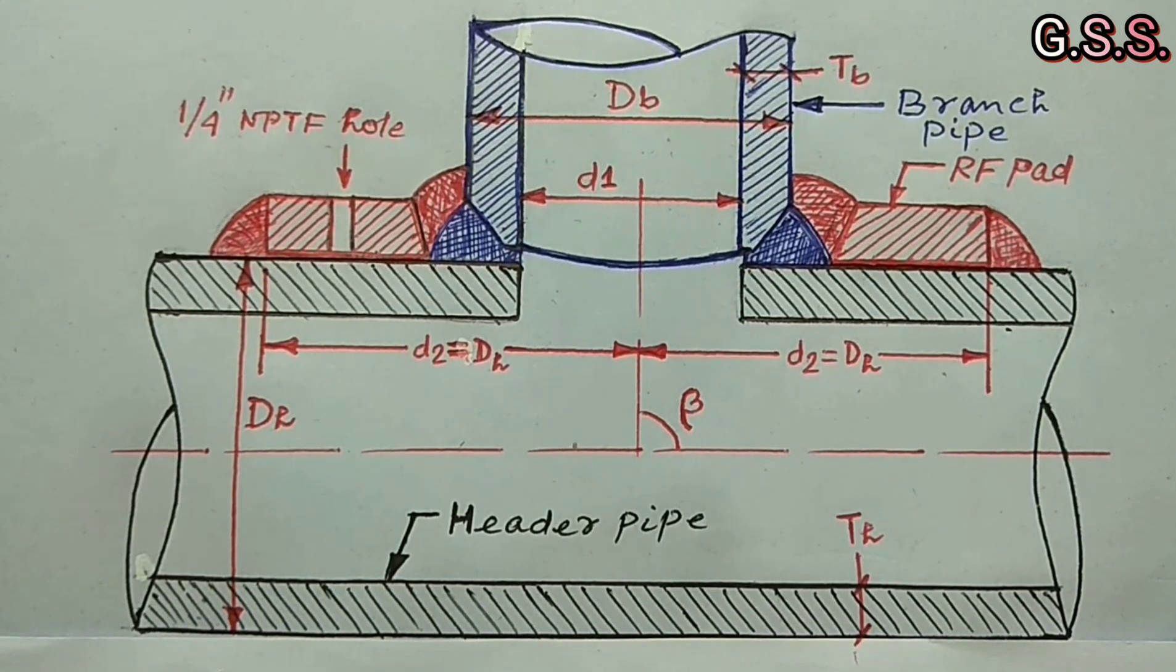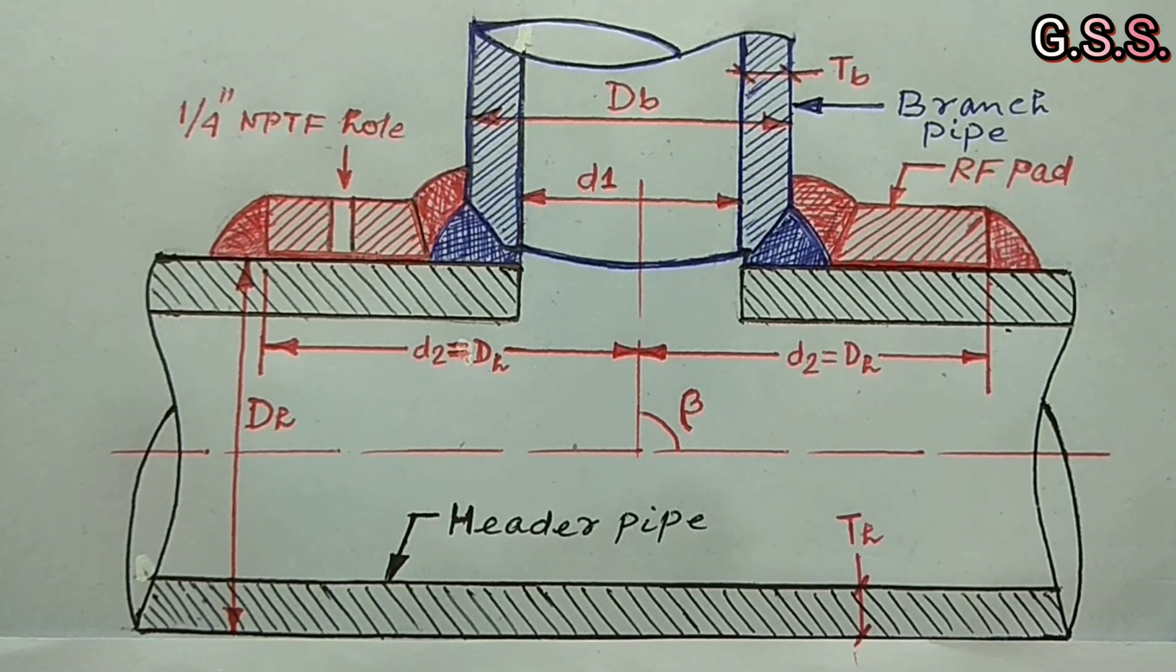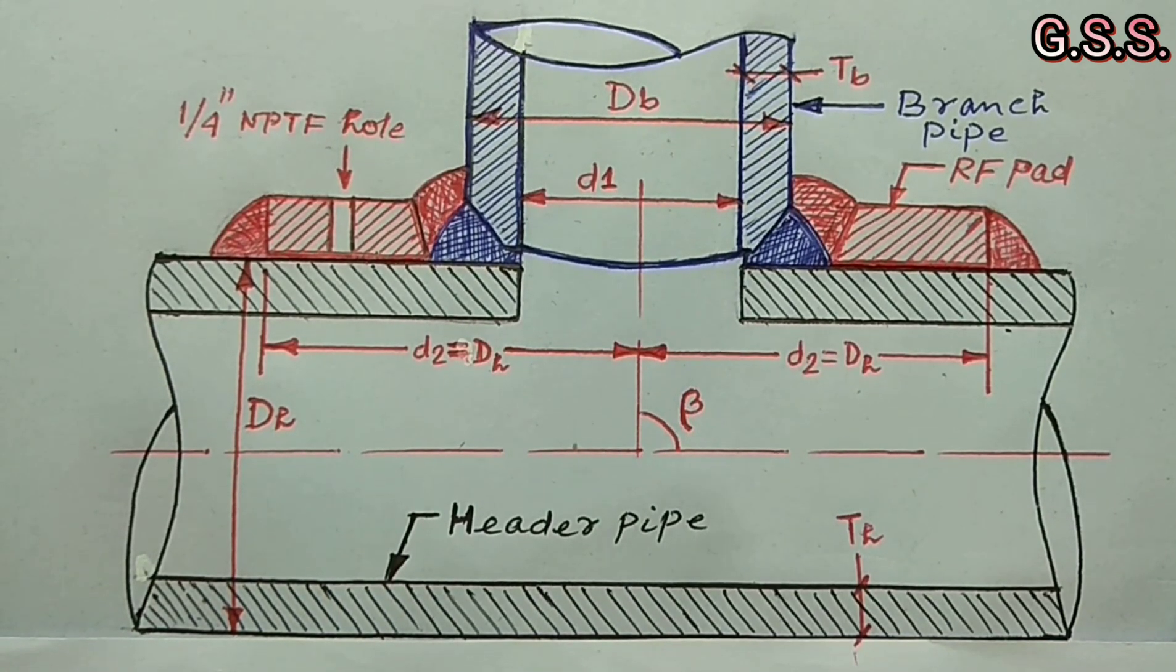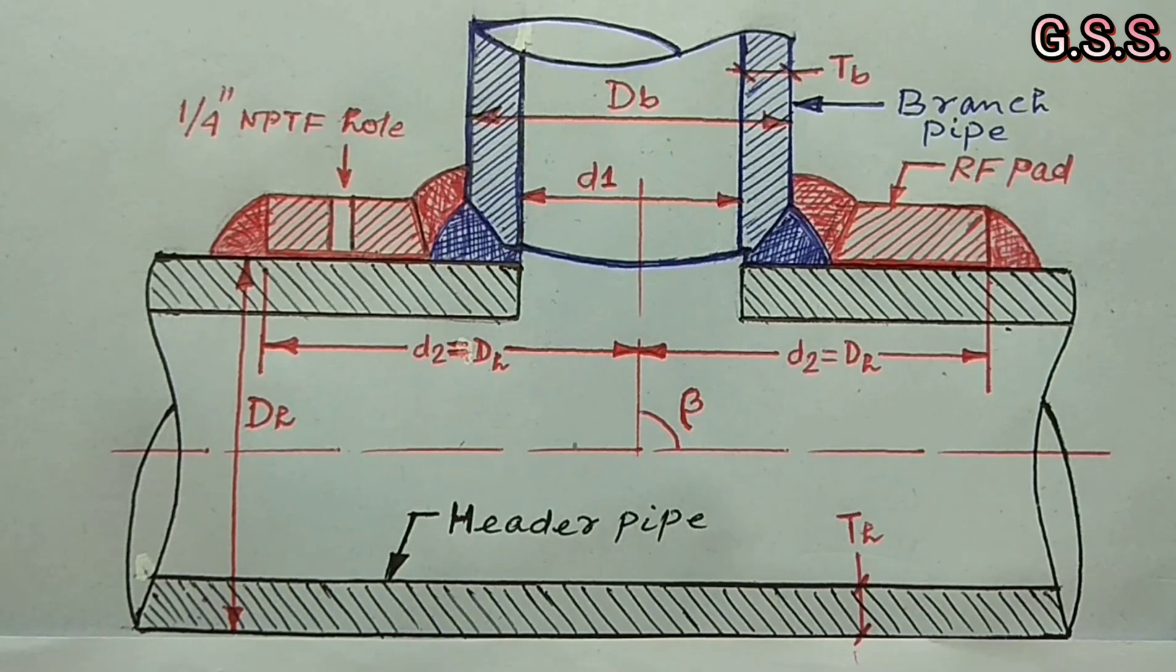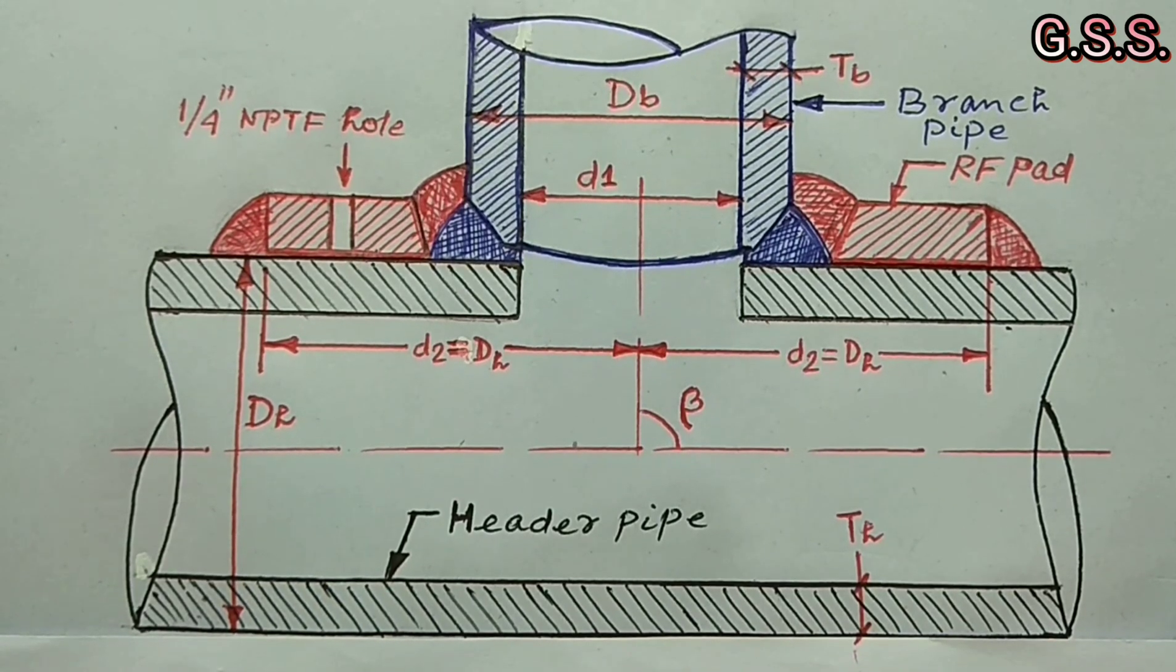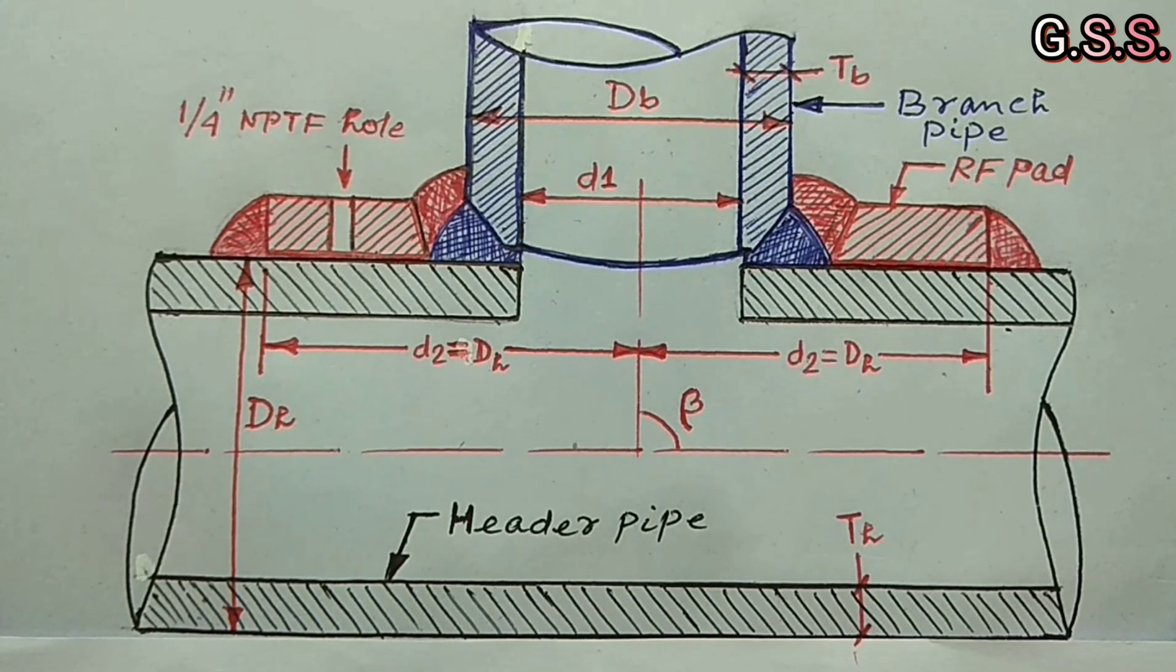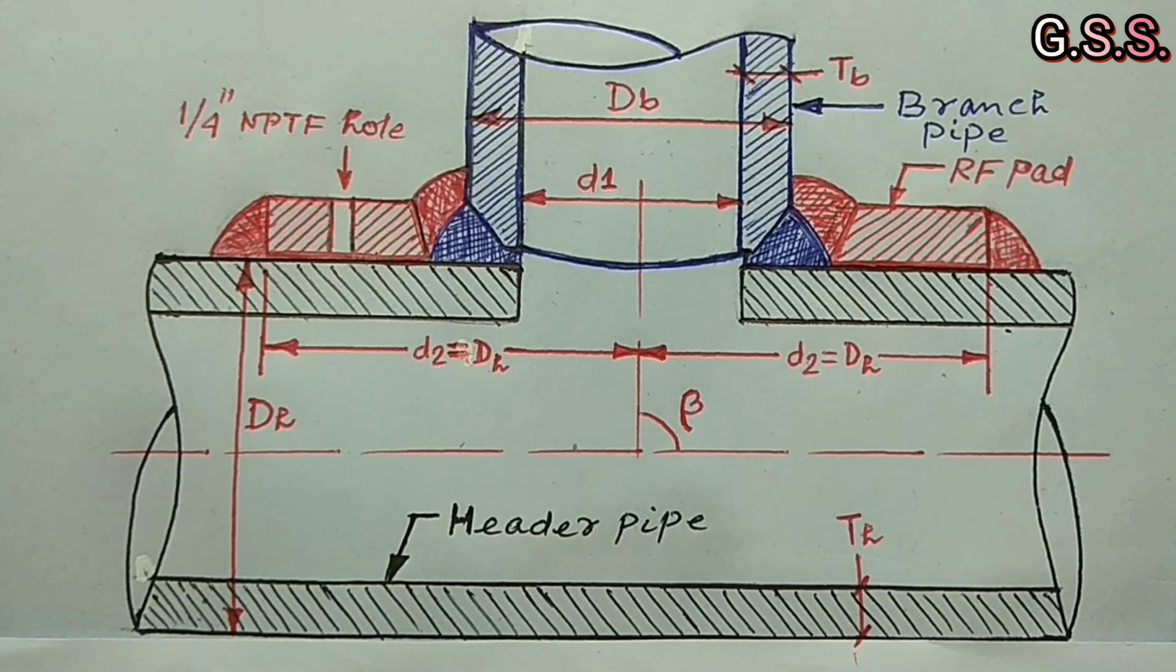Reinforcement pad is basically a ring that is cut from the header pipe. The width of the reinforcement pad is normally half of the diameter of the branch pipe. The aim of this reinforcement is to substitute the material that was removed for making the branch connection from the header.